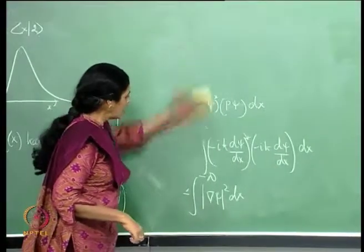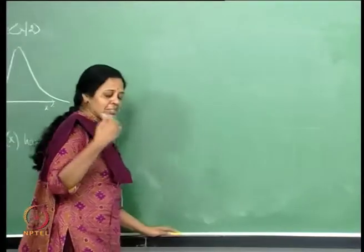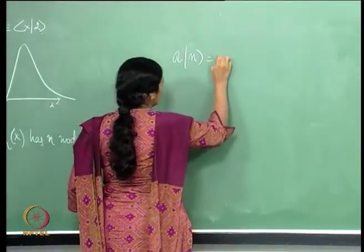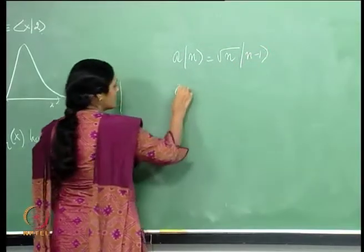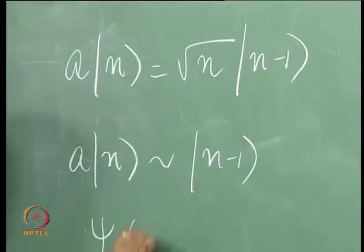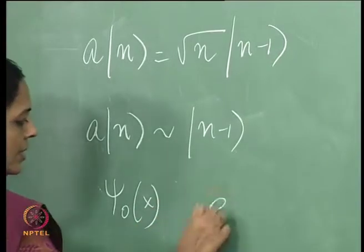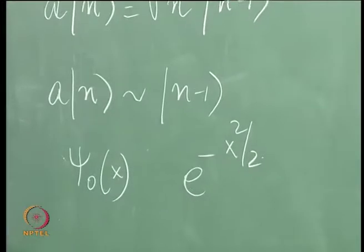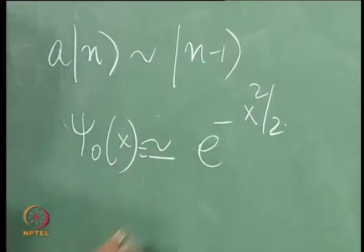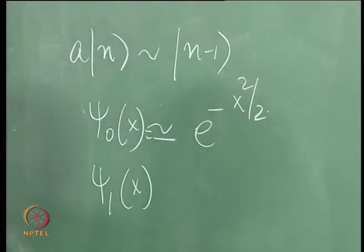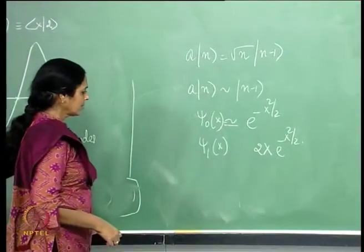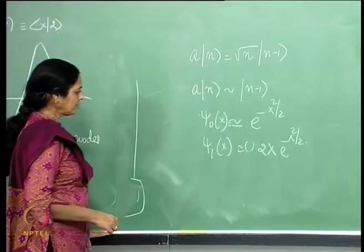To connect the operator method with the position representation: we know A|n⟩ ~ |n-1⟩. Indeed, ψ₀(x) ~ e^(-x²/2) (Gaussian) and ψ₁(x) ~ 2x · e^(-x²/2). In the position representation A ~ (d/dρ + ρ), acting on ψ₁(x) = 2x·e^(-x²/2).